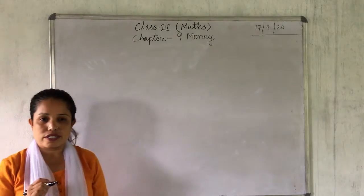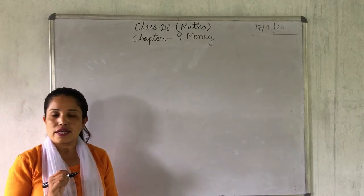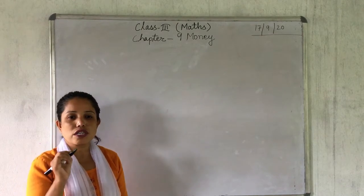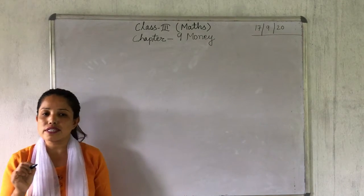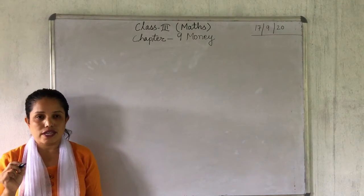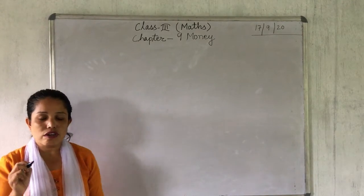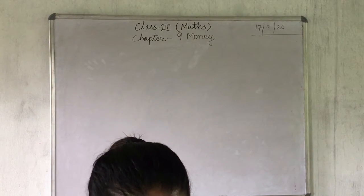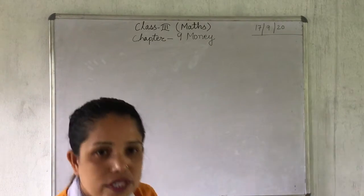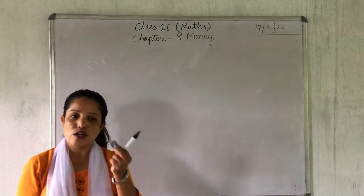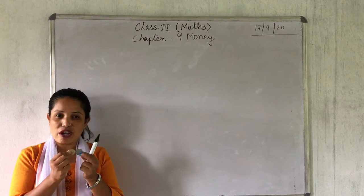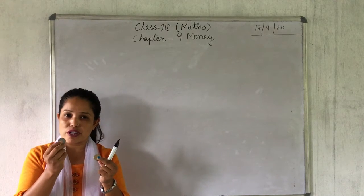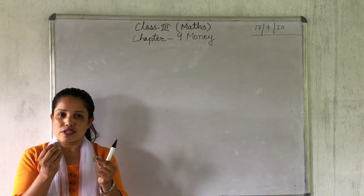The smallest unit is paise. Here is a coin I am going to show you. This is a coin. I hope you have seen the coin. 1 rupee coin, 5 rupees.